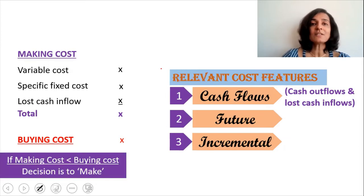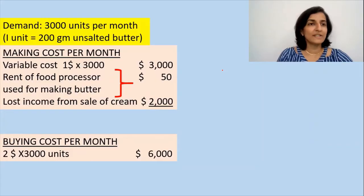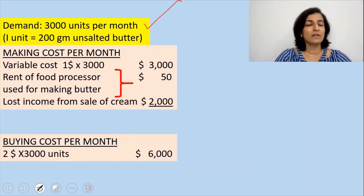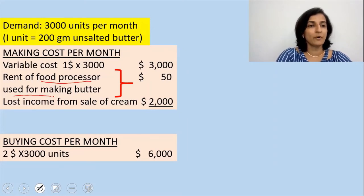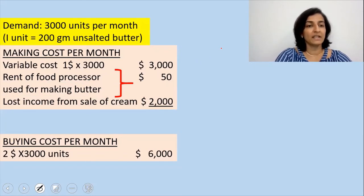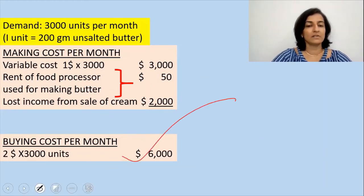Now let's work out the solution with the actual figures that Rebecca provides. The demand is 3,000 units per month and one unit is 200 grams of butter. The variable cost is $1 per unit multiplied by 3,000 units, giving $3,000. The rent of the food processor used exclusively for making butter is $50. The lost income from the sale of cream is $2,000. The buying cost is $6,000, that is $2 multiplied by 3,000 units.